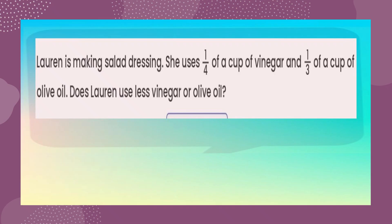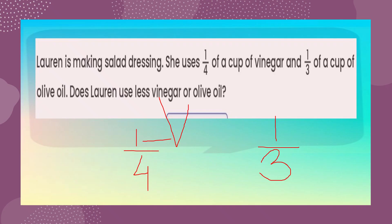Now we come back to our word problem. Lauren is making salad dressing. She uses one quarter of a cup of vinegar and one third of a cup of olive oil. Which does Lauren use less of? The numerators are the same. Higher the denominator, lower the fraction. So one quarter is less than one third. One quarter is vinegar, so Lauren uses less vinegar compared to olive oil.